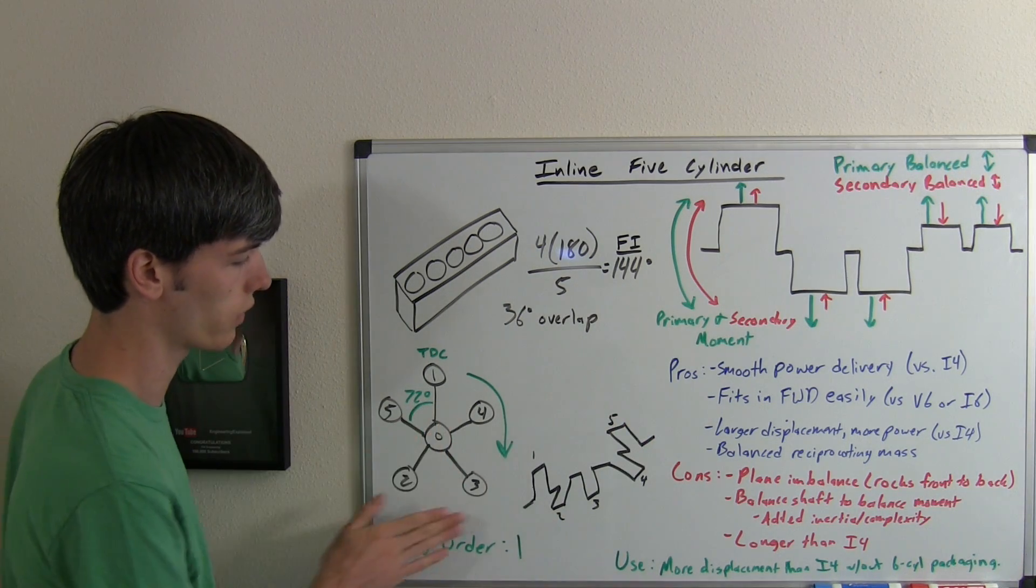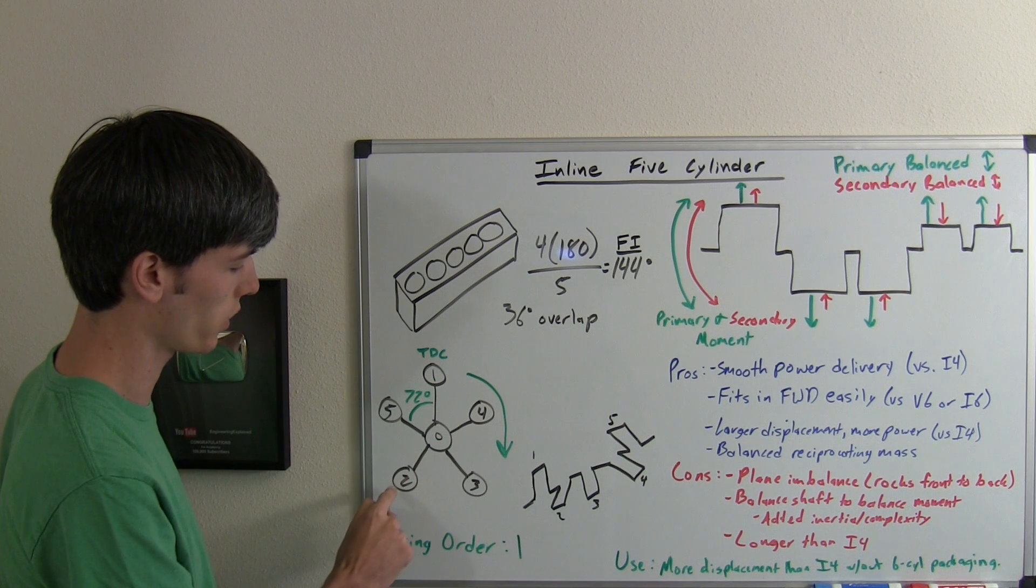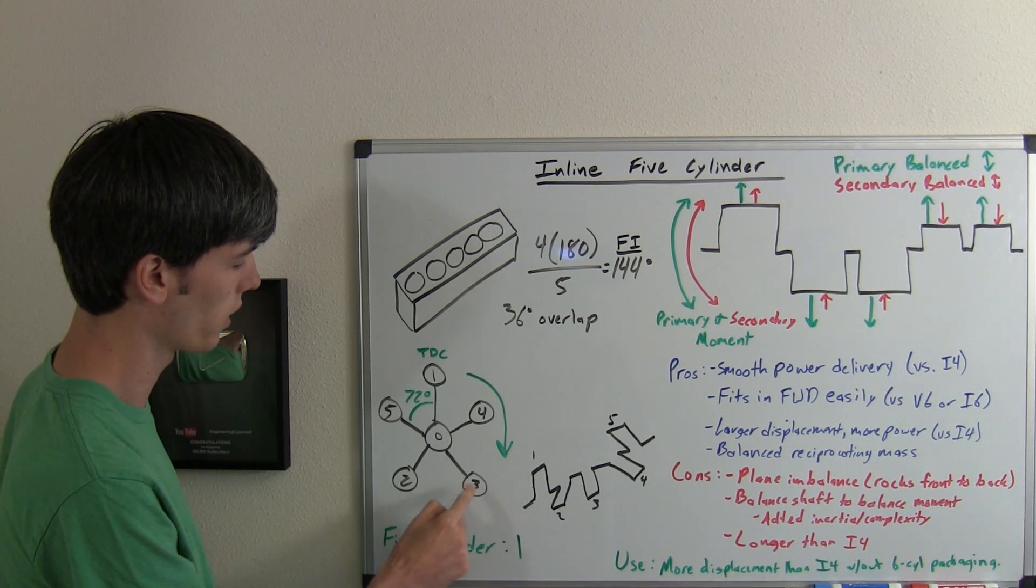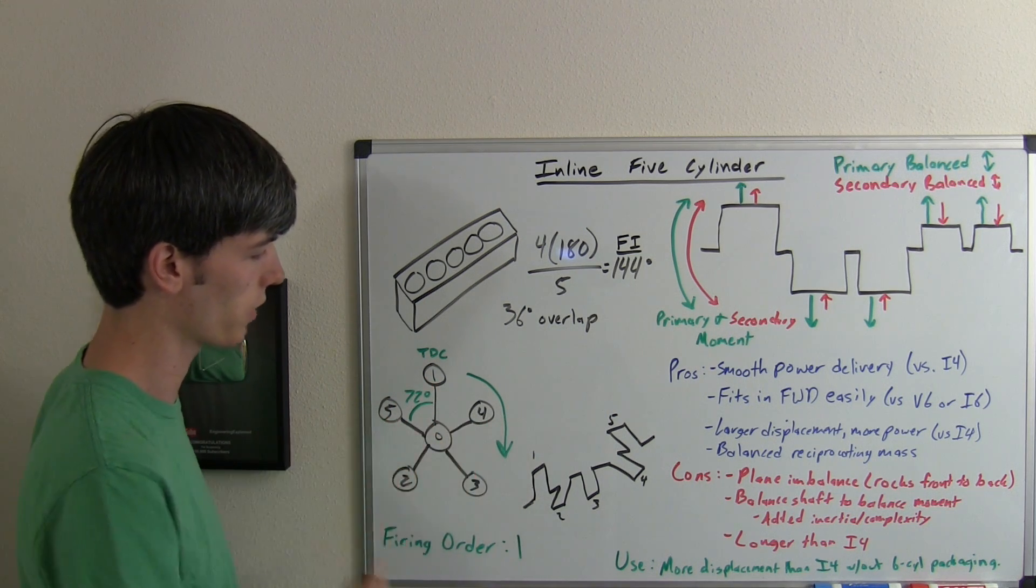If we're looking at the crankshaft directly on, we've got cylinder one here, cylinder two here, cylinder three here, cylinder four here, and cylinder five here.